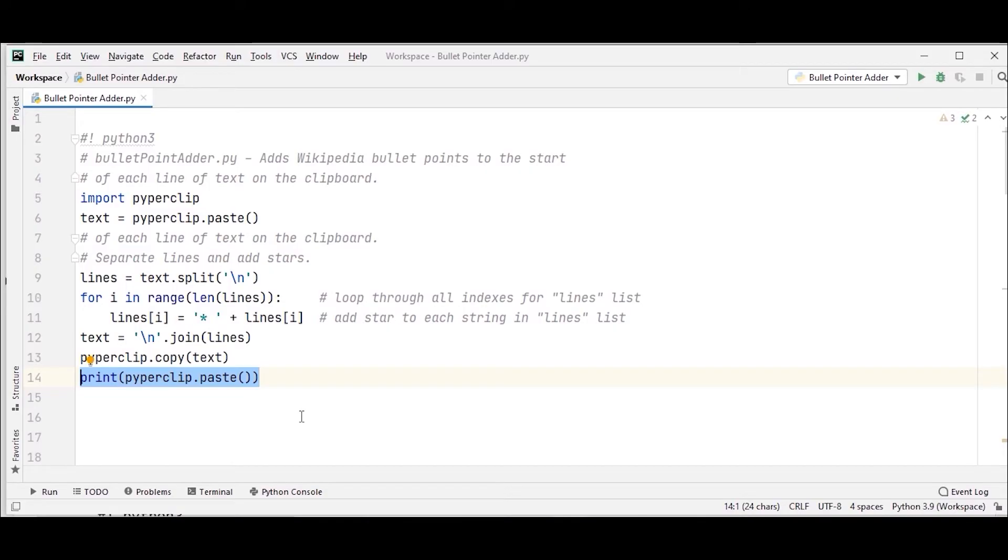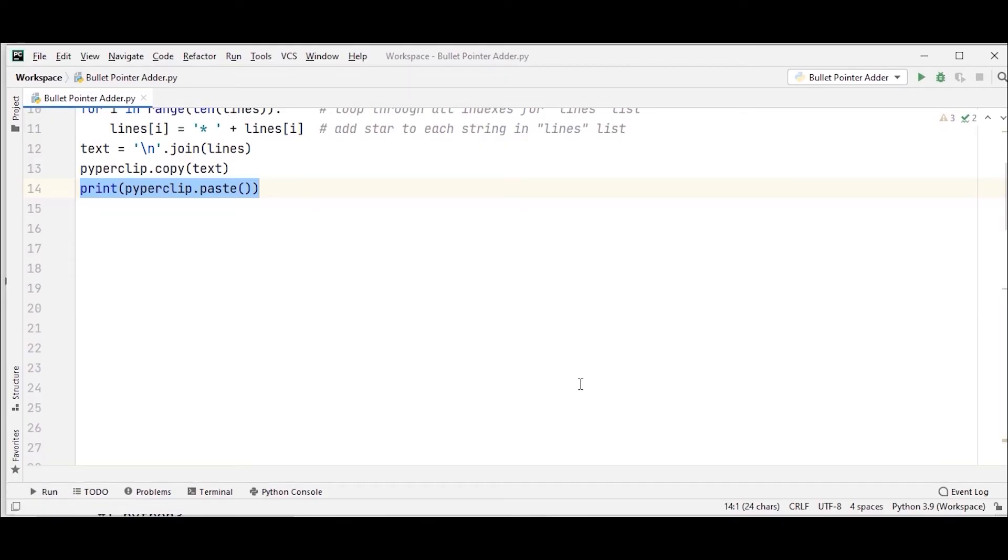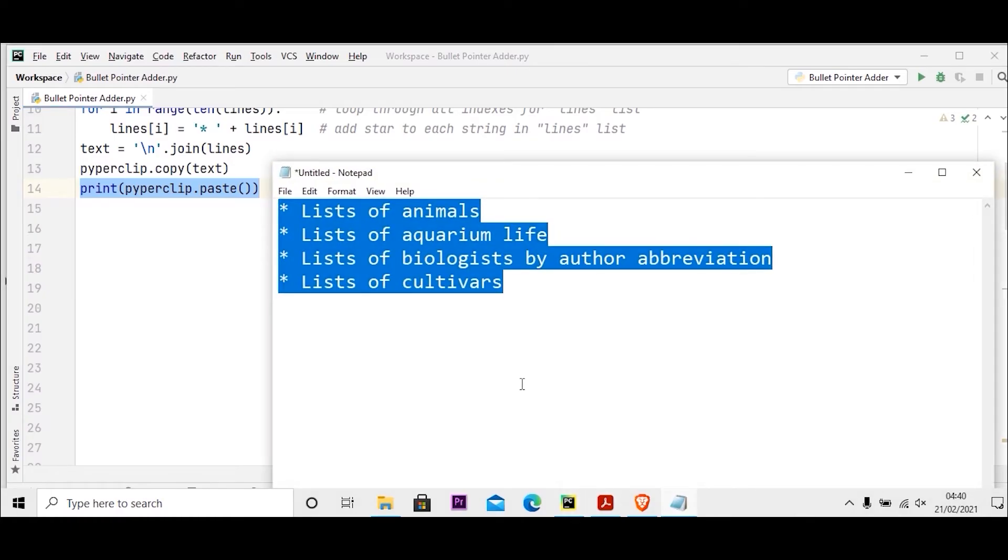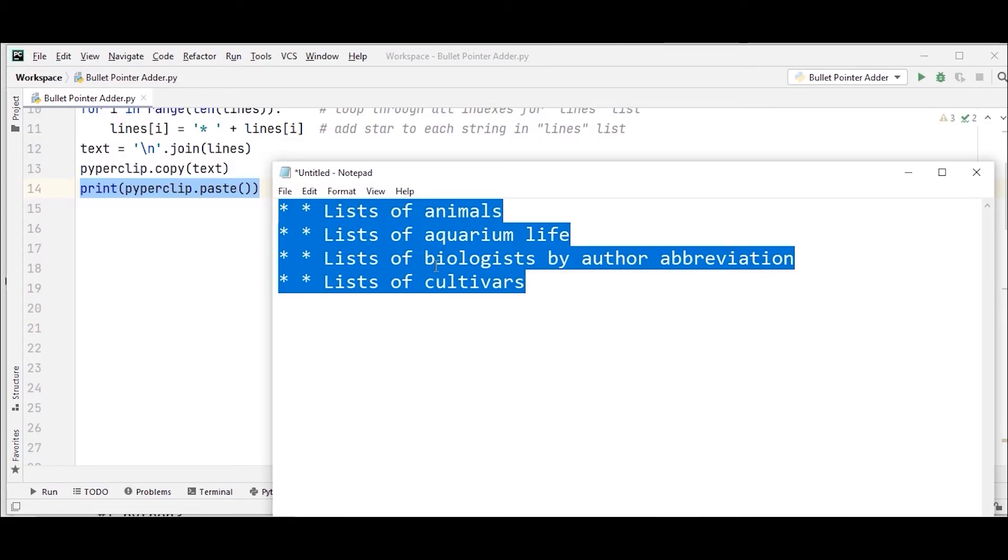And it will also bring the same thing to the notepad. I will show you and I will prove that it is true. Let me run my program. You can see that, earlier it had single bullets. Now, it has two bullets in front of every line. So this is what it is doing actually. And I will show you the notepad also, so that you believe that it has been changed. I am showing my notepad. And now, if I paste it here, you can see that two bullets have been added because of the program. So this is how it is done.